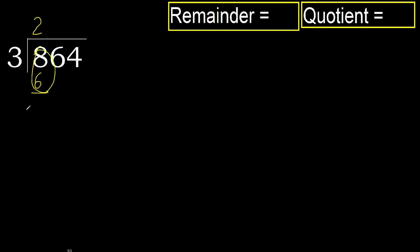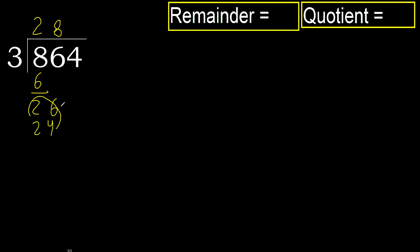Subtract 8 minus 6 equals 2. Next: 26. 3 multiplied by 9 is 27 — 27 is greater. Multiplied by 8: 24 is not greater.